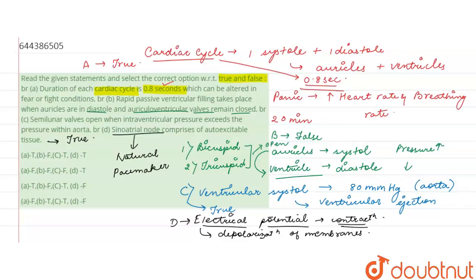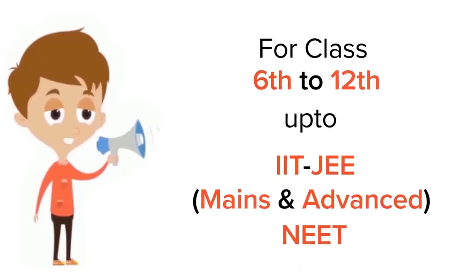From the given statements: A is true, B is false, C is true, and D is also true. So the first option is correct — that's the answer. Thank you. For class 6–12, IIT JEE, and NEET level, trusted by more than five crore students, download the Doubtnut app.